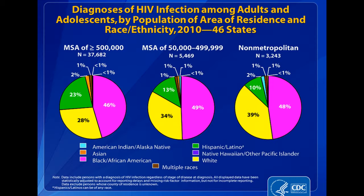Interestingly, when you look at diagnoses by age among adults and adolescents, in large cities most infection is in African Americans. But looking at non-metropolitan rural areas, Caucasians make up a pretty large percentage of infections. Other groups have smaller percentages, but still almost half of infections are African Americans. The percentage of Caucasians actually increases as we go from a large city to a rural area.